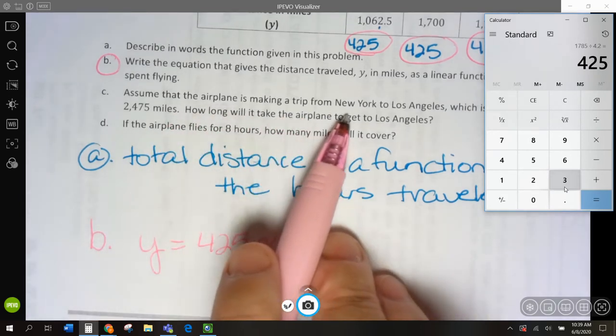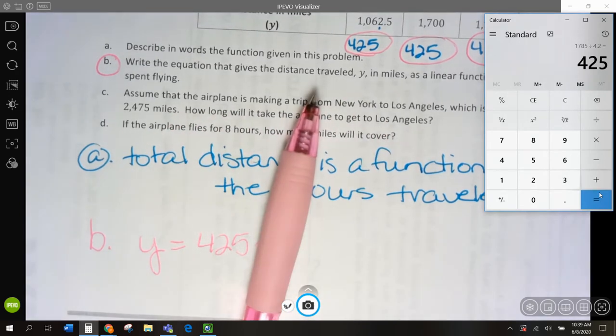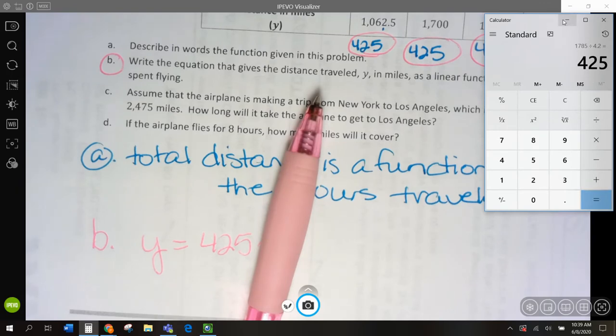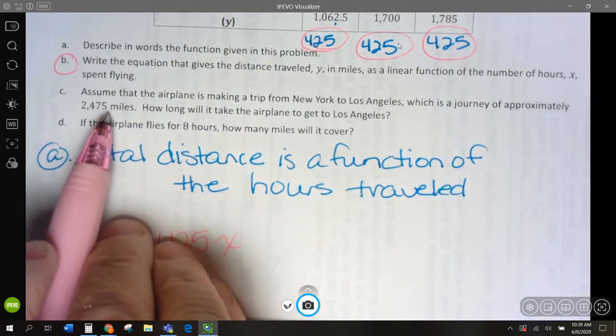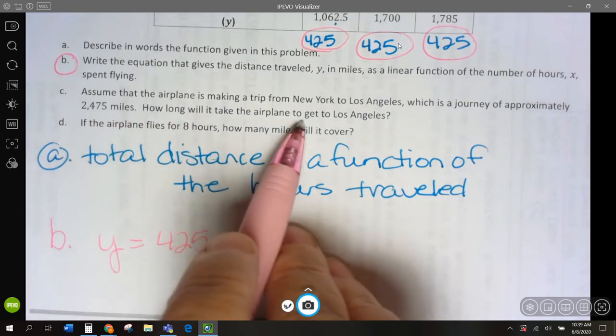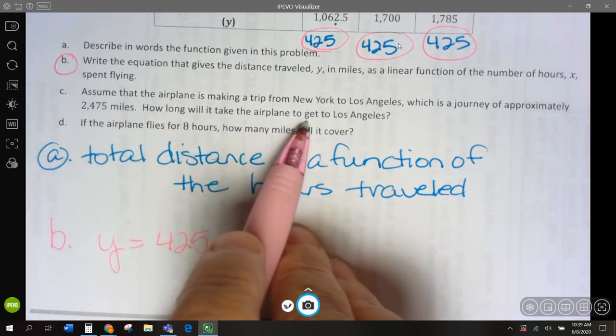C. Assume that the plane is making a trip from New York to Los Angeles, which is a journey of approximately 2,475 miles. How long will it take the airplane to get to Los Angeles? So, let's come up and do this. I'm going to do C up here.